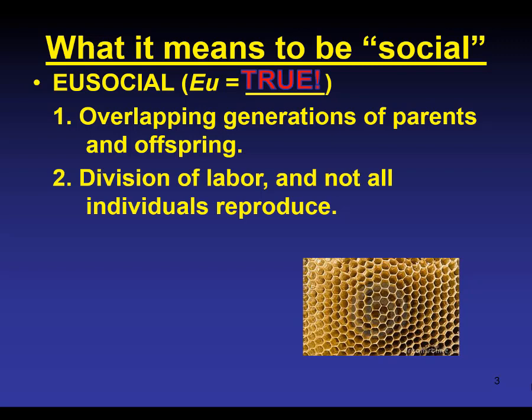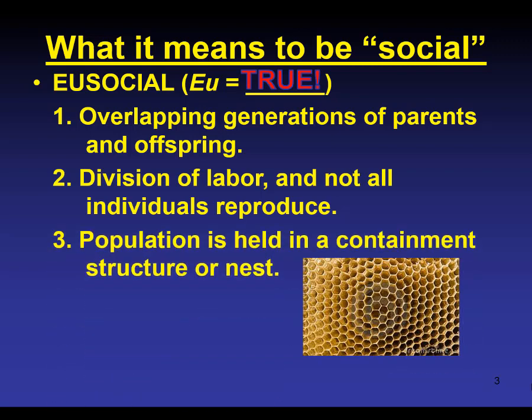The third requirement for being social is that you've got to have some kind of nest or containment structure for that social group. It could be a house, it could be an apartment complex, it could be a colony living underground or whatever.